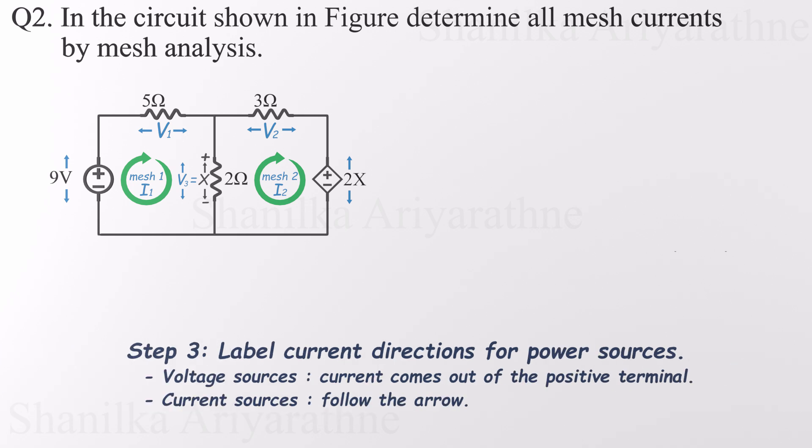Now it's time to label the current directions for the power sources. For voltage sources, current always flows out from the positive terminal. And just for reference, if we had current sources, we'd simply follow the direction of the arrow. But in this circuit, we're only dealing with voltage sources, so I've labeled the currents flowing outward from their positive sides. Simple, clear, and ready for the next step.